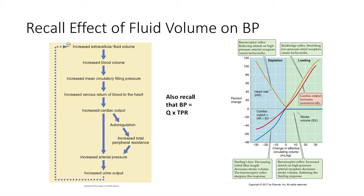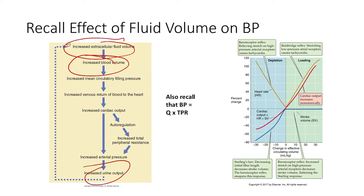Probably the kidneys' biggest role is their effect on fluid volume and blood pressure. Higher volume means higher blood pressure, but the kidneys can affect blood pressure by excreting excess volume. If we've got increased extracellular fluid volume, it can lead to increased blood volume. It can eventually lead to increased urine output to balance that out — it's a negative feedback loop. If we overhydrate, we have a greater urge to urinate to keep fluid volumes balanced out.